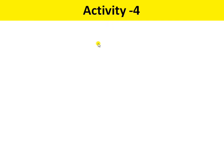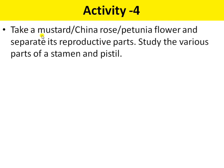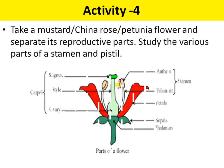Next is Activity 4th. You have to take mustard, china rose, or a petunia flower and separate its reproductive parts. Then study the various parts of the stamen and pistil — the various reproductive parts of a plant.